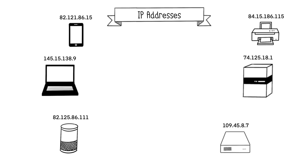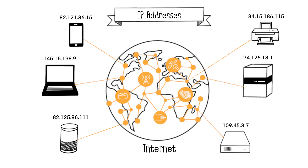An IP address is a unique number that identifies each machine connected to the Internet, whether it's a router, printer, smartphone, web server, or any connected device. The series of numbers you see above each machine is their IP address. These IP addresses allow different machines connected to the Internet to communicate with each other, much like phone numbers for us. When you want to communicate with someone, you do it through their phone number, which is unique.